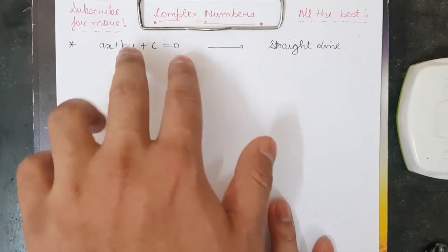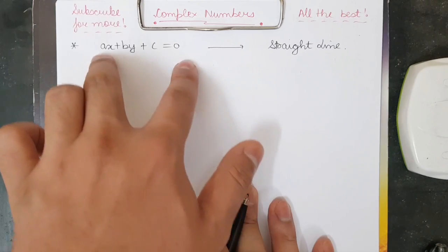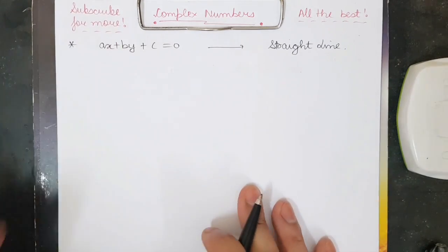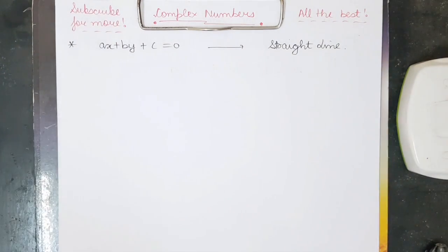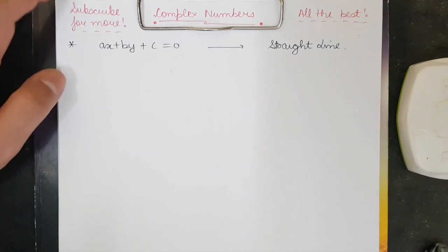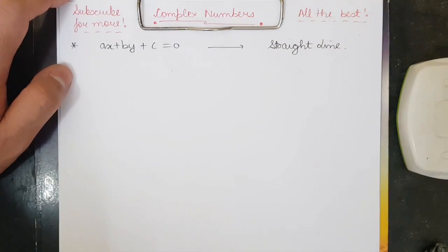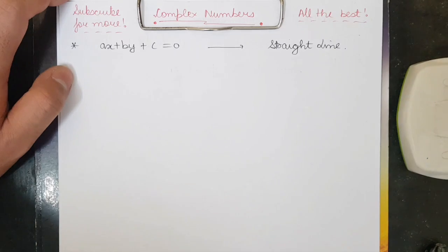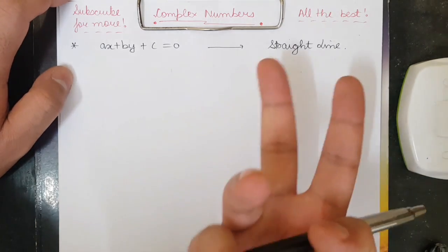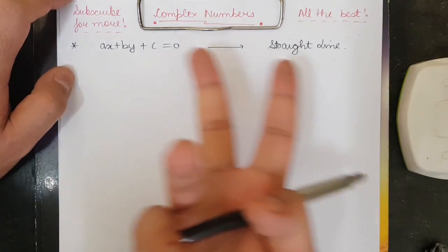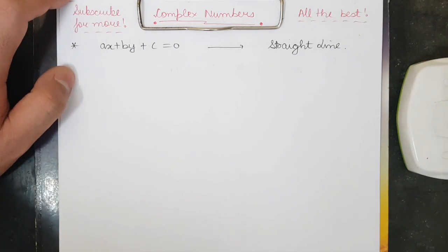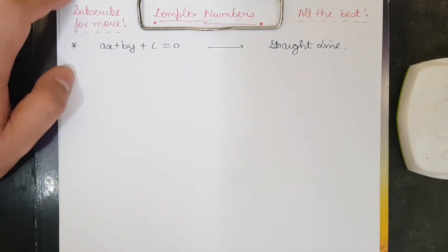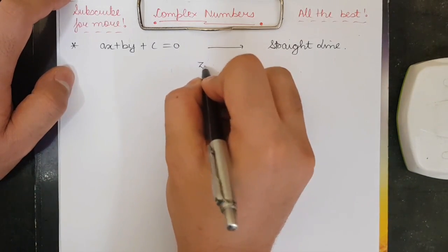First of all, I have written the equation of a straight line in 2D form because I want to explain a very important thing — many people don't even know how the equation of a straight line comes in complex form. After that, you can derive circles and parabolas by yourself. Let me tell you how the straight line equation arises.